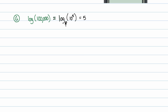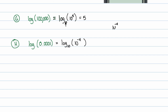Let's try another one: log of 0.0001. Again, the silent base means it's log base 10. I'd really like to write this as a power of 10 if I can. This is 10 to the negative fourth — you can check that: 10 to the negative fourth is 0.0001. So I have log base 10 of 10 to the negative fourth, which turns into negative 4.